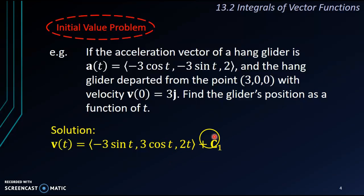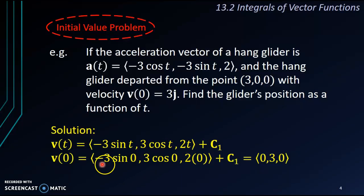Next, after you get the v(t), we need to find out what is the C₁. So in order to find out the C₁, we need to look at what is the information given here. It says here, v(0) is 3j. So we try to substitute t with 0, for each of the components here, and we get (-3 sin 0, 3 cos 0, 2(0)) + C₁.